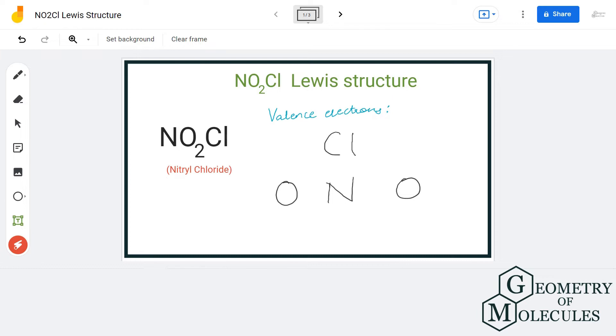Here we have one nitrogen atom which has five valence electrons, two oxygen atoms each of them have six valence electrons, and one chlorine atom which has seven valence electrons. So in total we have 24 valence electrons for this molecule.